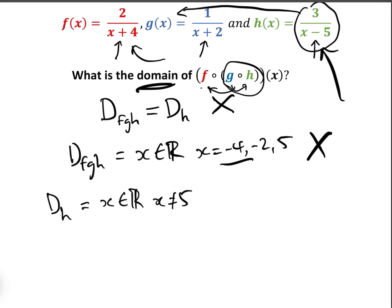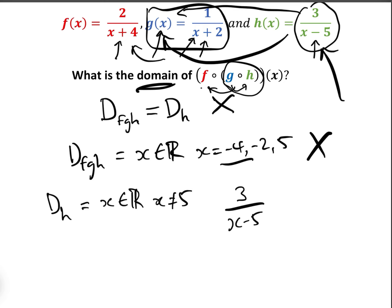When we put h into g and look at g(x), whatever goes into g cannot be minus two, because otherwise we'd have minus two plus two, which is zero, and we'd be dividing by zero. What is going into g? In fact, h(x) is going into g, so we can't have three over (x minus five) equal to minus two, because if it does equal minus two, then putting it into g gives one over (minus two plus two), which is one over zero — infinite.